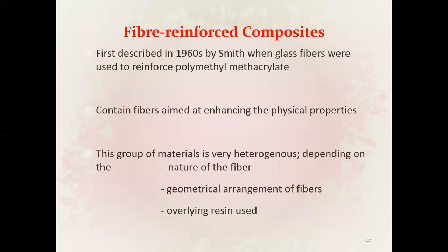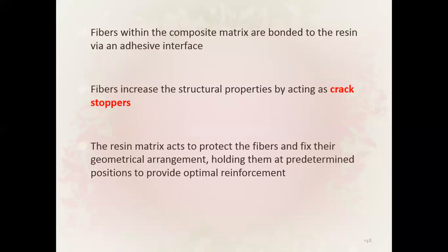Fiber reinforced composites were first described in the 1960s by Smith, when glass fibers were introduced to reinforce polymethyl methacrylate. They contain fibers aimed at enhancing physical properties. This group of materials is heterogeneous depending on the nature of the fiber, geometrical arrangement of the fibers, and overlying resin used. Fibers within the composite matrix are bonded to the resin by an adhesive surface interface.